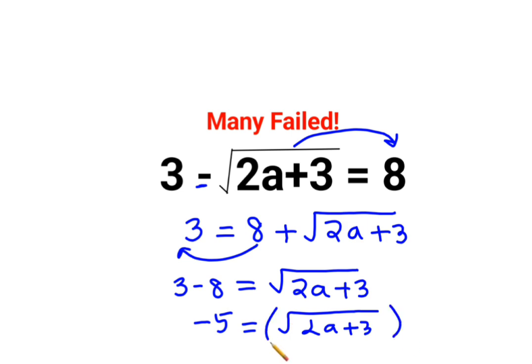Taking squares on both sides, we have minus 5 square is still positive 25. Root and the square can get cancelled, so we have 2a plus 3.